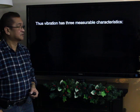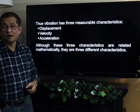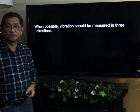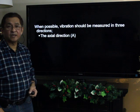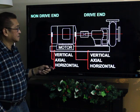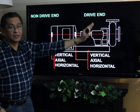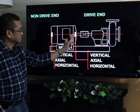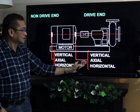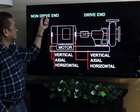Vibration has three measurable characteristics — displacement, velocity, and acceleration. Although these are mathematically related, they are three different characteristics. When possible, vibration should be measured in three directions: axial, horizontal, and vertical. For example, on a pump driven by an electric motor, for each bearing position — drive end and non-drive end — you measure vibration in vertical, horizontal, and axial directions, where axial is parallel to the shaft.